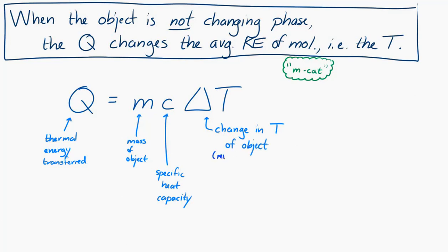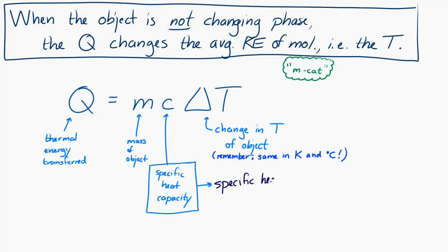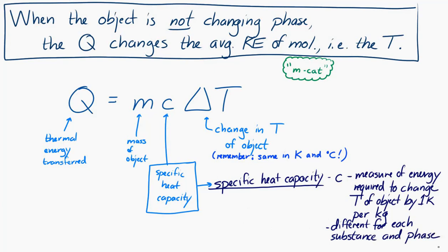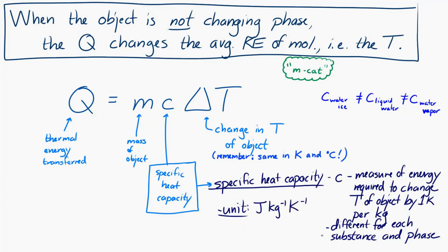The change in temperature of an object is the same in Kelvin and in degrees Celsius. The specific heat capacity, represented with a lowercase c, is a measure of the energy required to change the temperature of one kilogram of a substance by one Kelvin. It's different for each substance and for each phase. For example, ice has a different specific heat capacity than liquid water, which has a different specific heat capacity than water vapor. The unit is joules per kilogram per Kelvin, which is the same as joules per kilogram per degree Celsius.